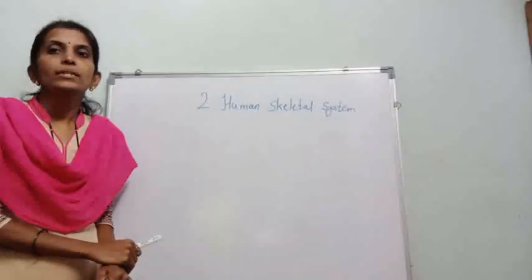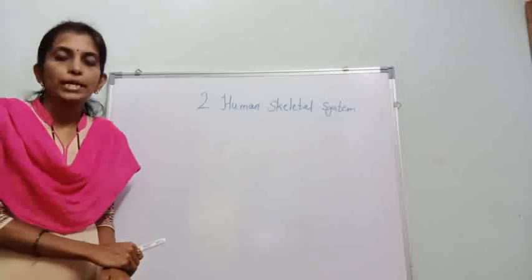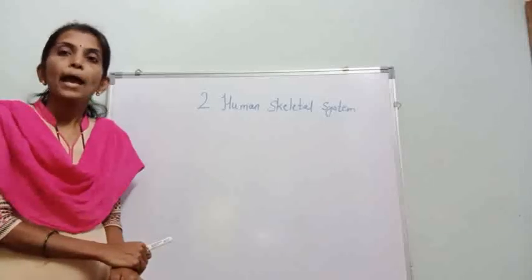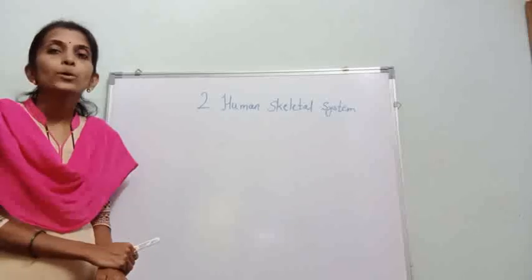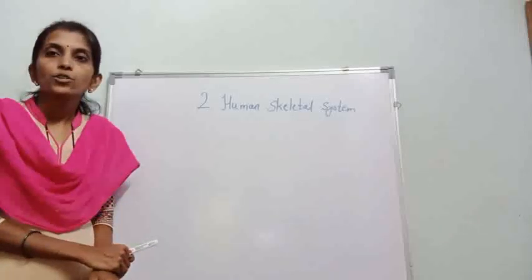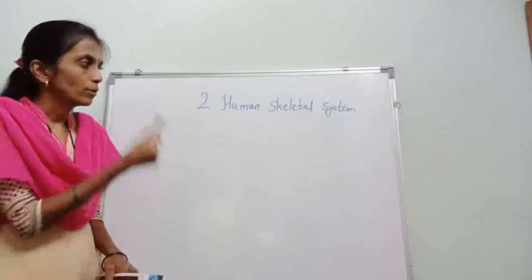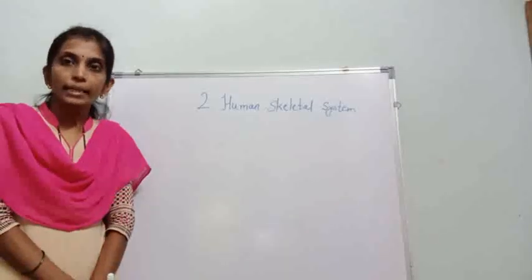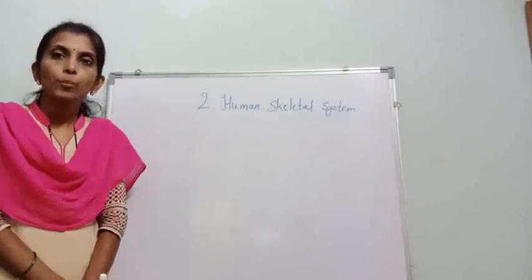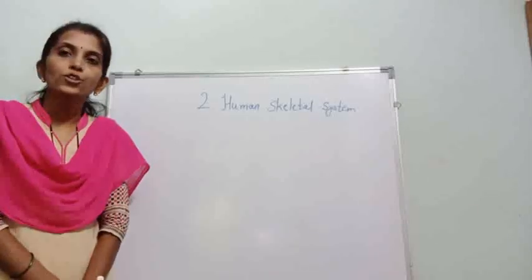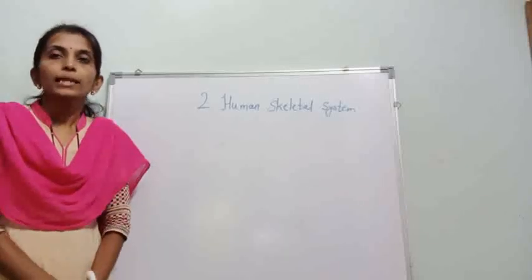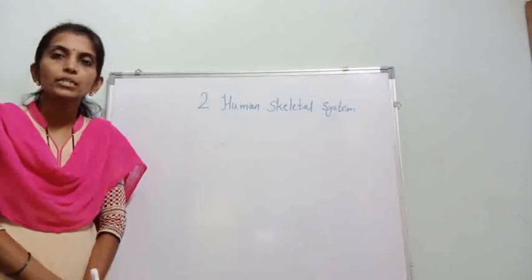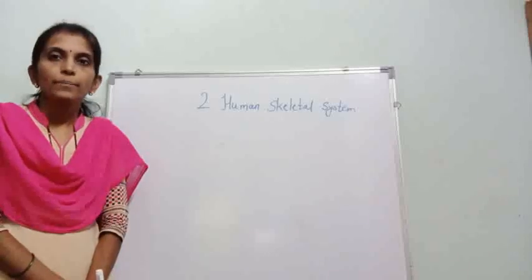The skeletal system is related to the bones and joints. In our bodies there are a number of bones and muscles also. When two bones and joints bind together, our skeletal system is formed. When one bone is attached to the other bone, it joins to each other, and like that our skeletal system is formed. So let us study it step by step.